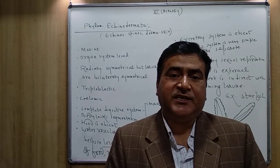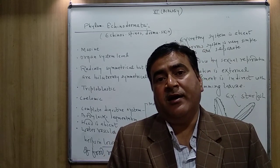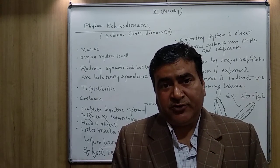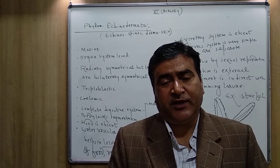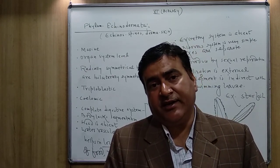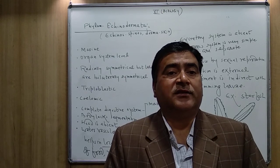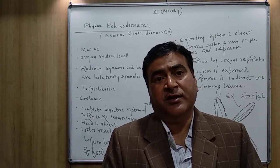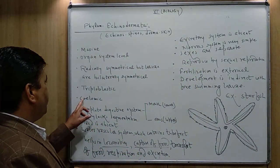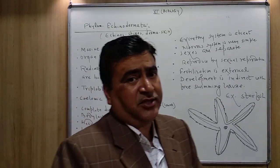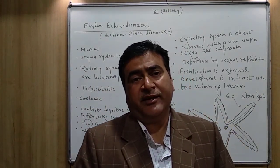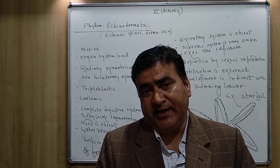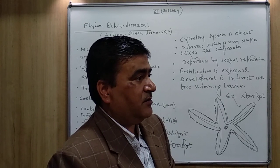In the larval stage, the larvae show bilateral symmetry. So the adult shows radial symmetry while the larval stage shows bilateral symmetry.